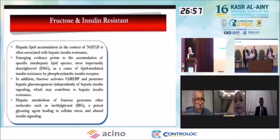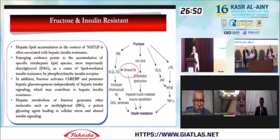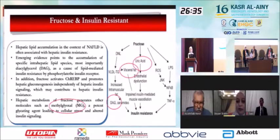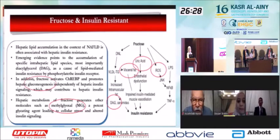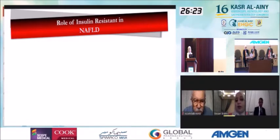We also have insulin resistance as another factor. Insulin resistance results from fructose through multiple pathways. First, the fatty liver itself causes insulin resistance. Second, many metabolites produced during fructolysis — such as DAG (diacylglycerol) and methylglyoxal — both impair insulin signaling and give us insulin resistance. Uric acid also produces more insulin resistance.